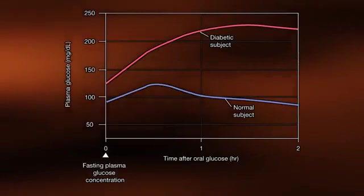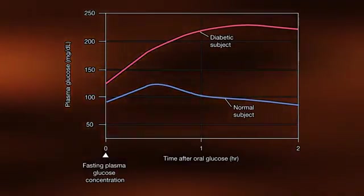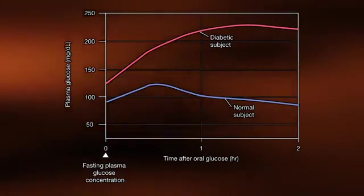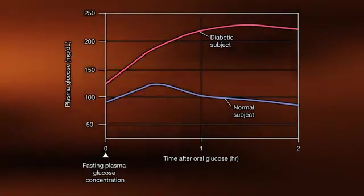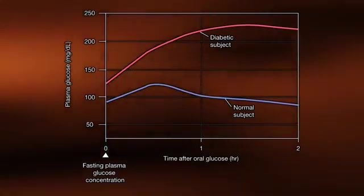Diagnosis of insulin resistance can be performed by an oral glucose tolerance test in which, after fasting overnight, the individual consumes a glucose drink and the rate at which glucose is cleared from the blood is measured over time. A non-diabetic individual will clear the glucose within 90 minutes, while a diabetic subject will take significantly longer as a result of insulin's inability to effectively promote glucose uptake.